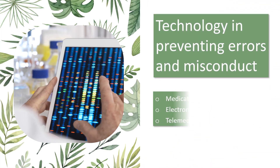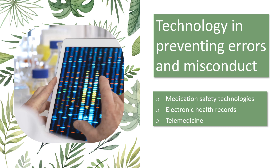Technology can play a significant role in preventing errors and misconduct in healthcare. Medication safety technologies such as barcoding, automated dispensing machines, and smart infusion pumps can help reduce medication errors, one of the most common types of errors in healthcare. Electronic health records can improve patient safety by providing healthcare professionals with access to patient information, reducing the chances of miscommunication or missed information. Telemedicine can provide patients with access to care and reduce the likelihood of errors by enabling healthcare professionals to provide remote consultations, monitor patients remotely, and share information quickly and efficiently.